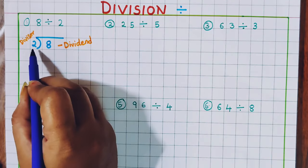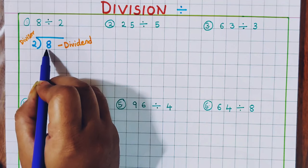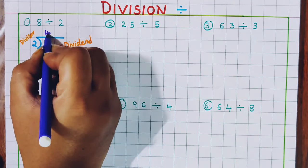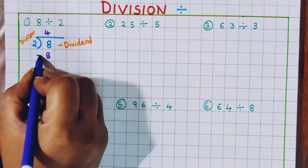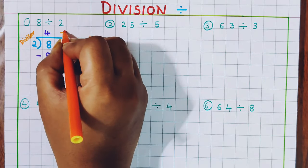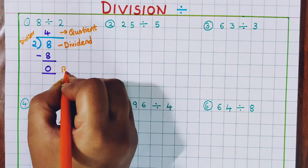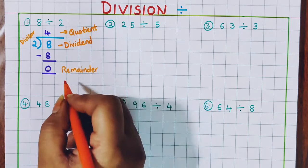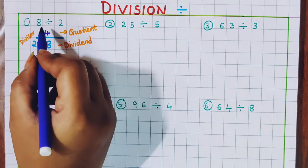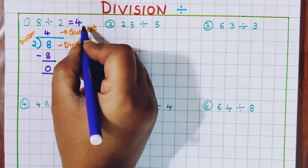Now let's see how we are going to do this problem. 8 divided by 2. Let's see whether 8 is divisible by 2. In the table of 2, are we getting 8? Yes, 2 fours are 8. Now here I will do minus and then I will get 0. Here 4 is the quotient and 0 is the remainder. So the answer of 8 divided by 2 is equal to 4. What we get in the quotient, that is going to be the answer.